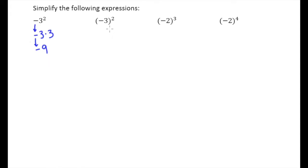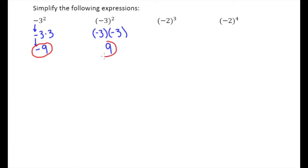Now we have a very similar looking problem, but there's definitely a difference. Here my negative 3 is in parentheses, and what this says is that the square is applying to the number negative 3 — not just to 3 with a negative in front. So this literally means negative 3 times itself. We know that a negative times a negative gives a positive answer. So we get two similar-looking problems with two different answers: in one case negative 9, in the other case positive 9. Without parentheses, you only square the number and the negative goes along for the ride. With parentheses, you're squaring the entire negative number.